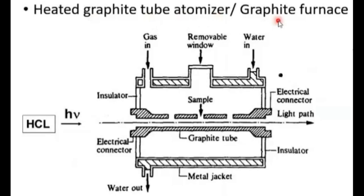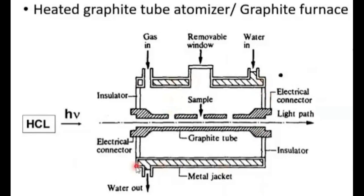Let's look at the heated graphite tube atomizer — simply called the graphite furnace. The graphite tube has one opening for sample introduction. Gas enters and exits the graphite tube. The gas also surrounds the tube from both sides, and this neutral inert gas flows continuously.